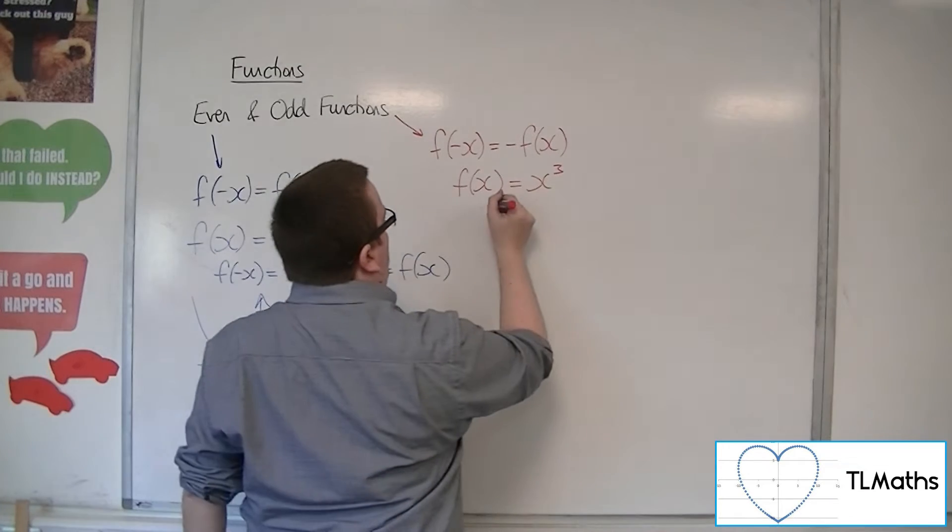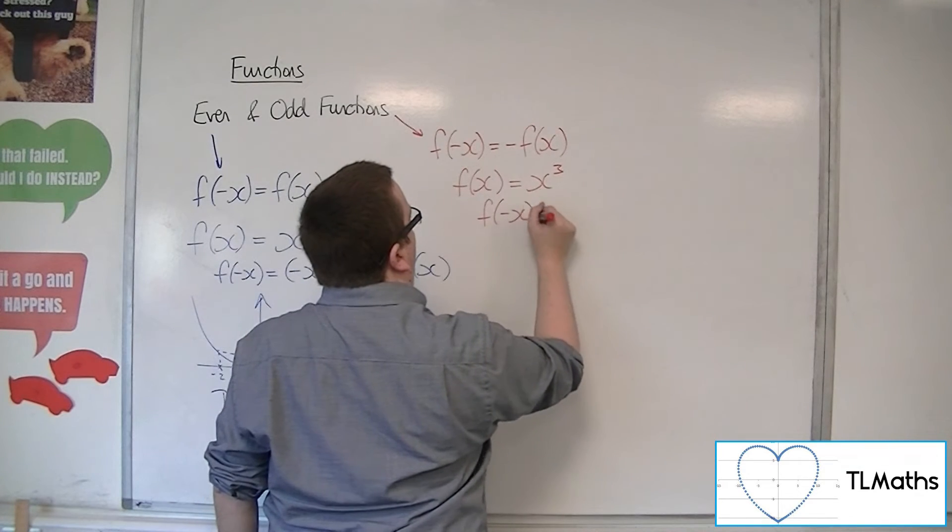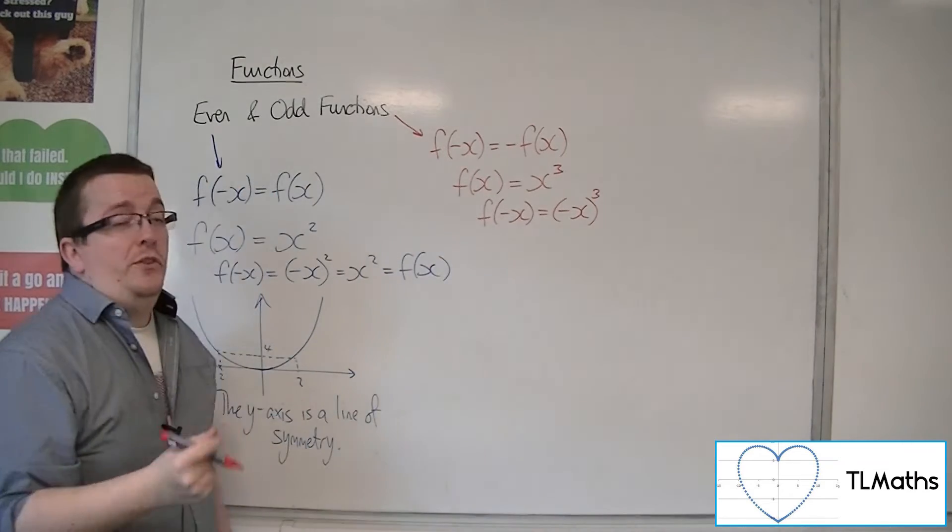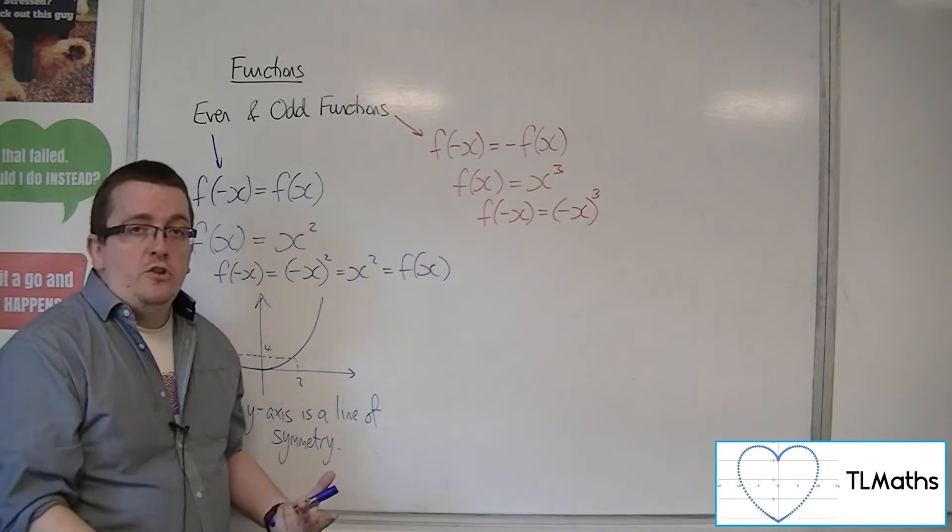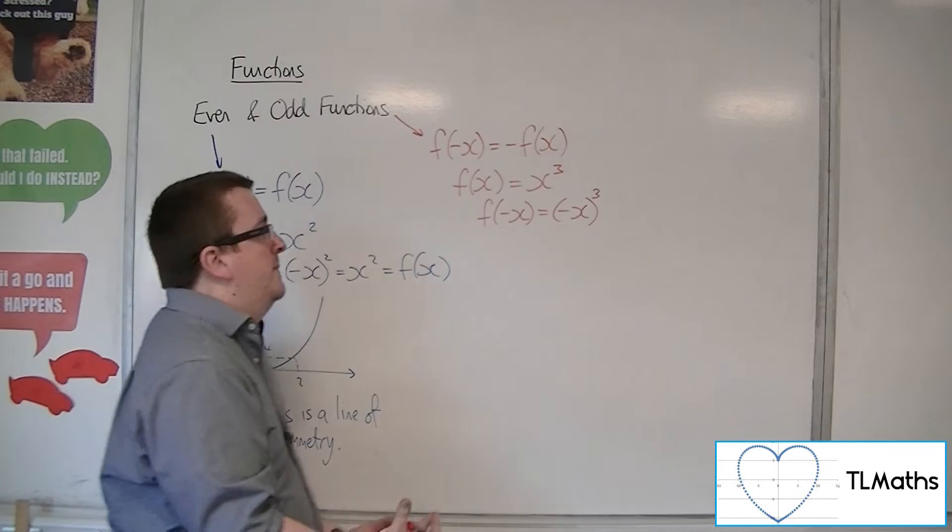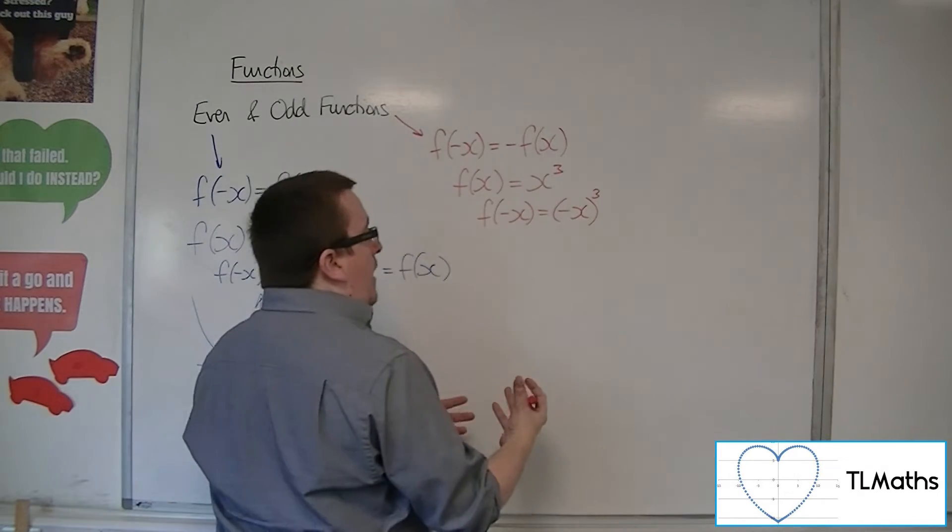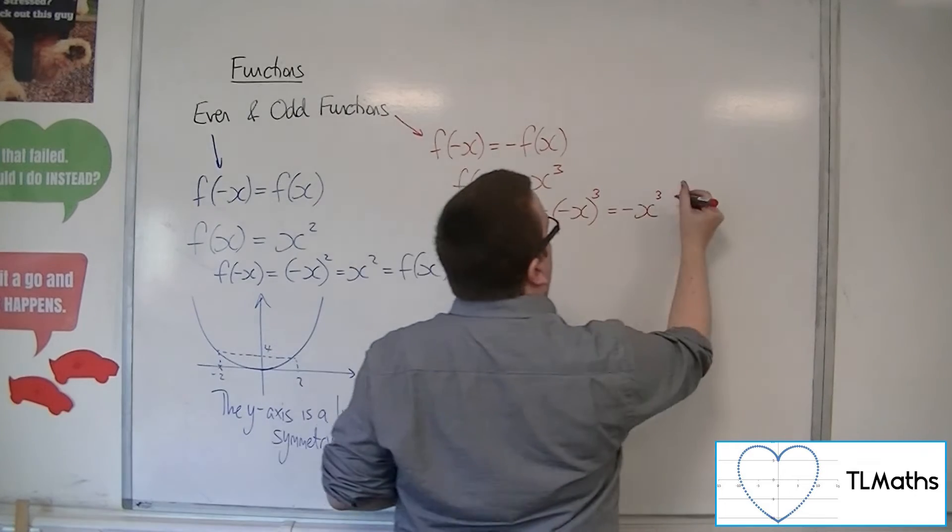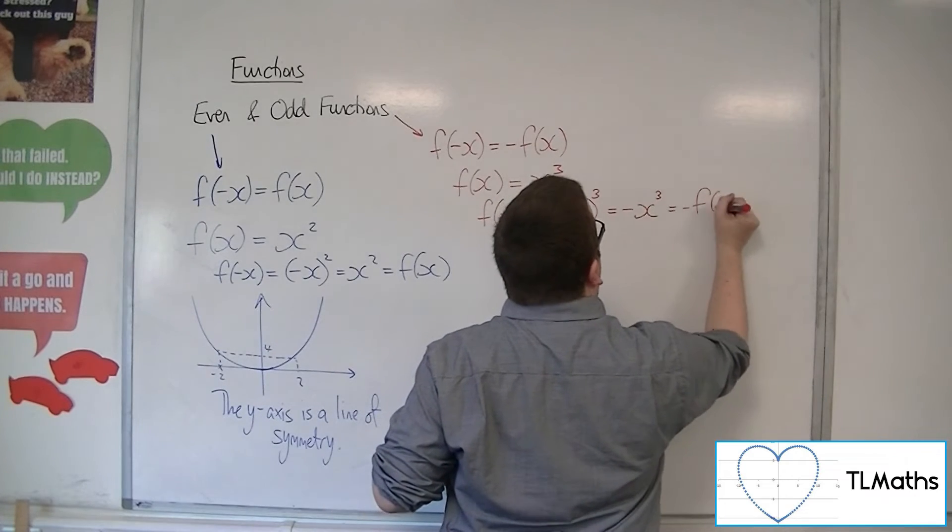Because if I replace the x with minus x, I get minus x all cubed. So something like minus 2, all cubed, is minus 8. The fact is you can bring that minus sign out, and that's the same as minus x cubed, which is minus f of x.